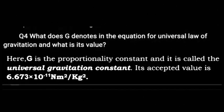Question 4: What does G denote in the equation for the Universal Law of Gravitation, and what is its value? G is a proportionality constant called the Universal Gravitational Constant. Its value is 6.673 into 10 to the power minus 11 Newton metre square per kg square.